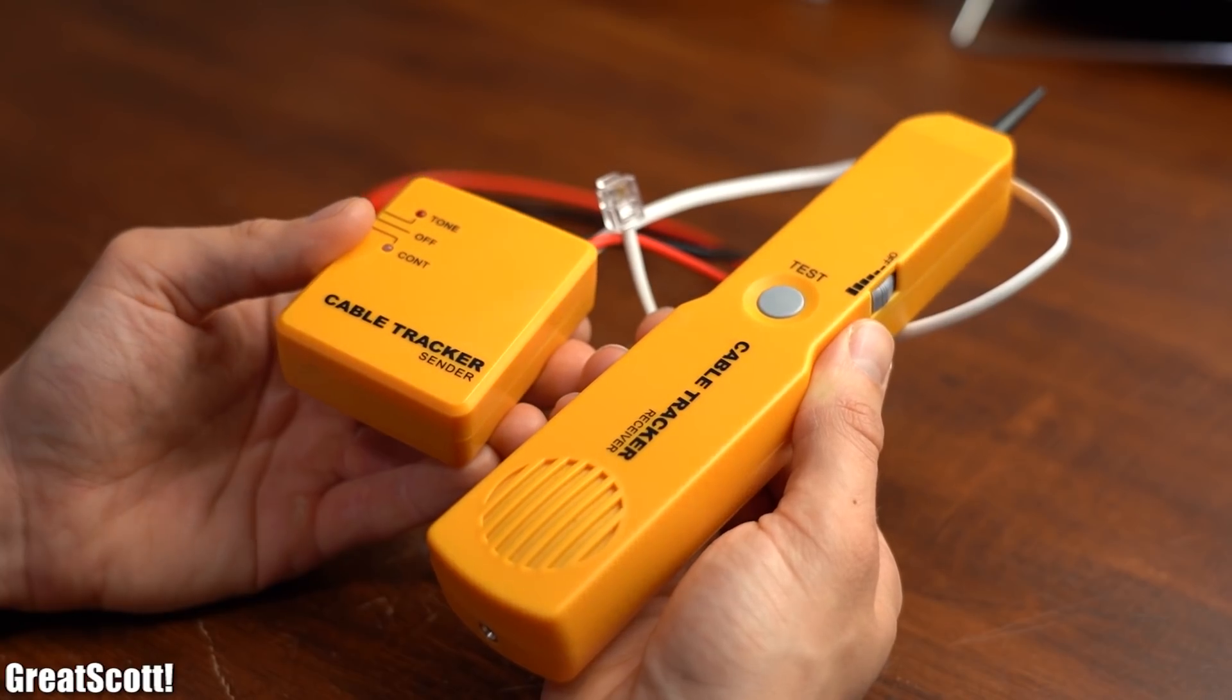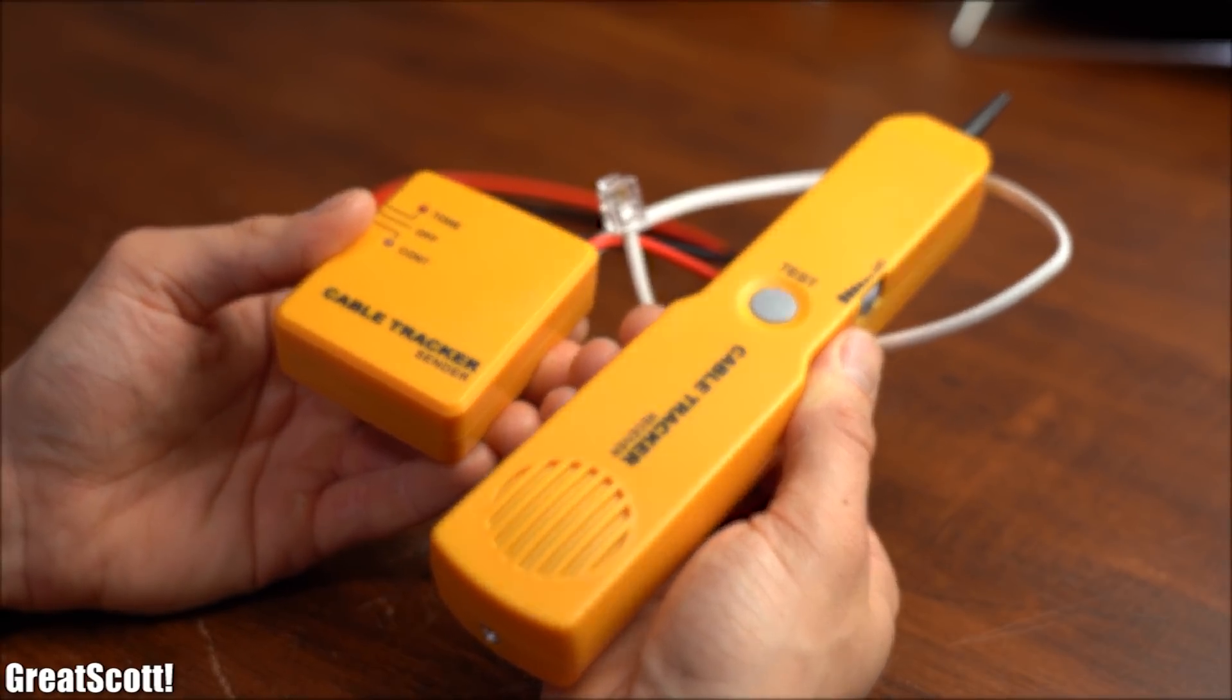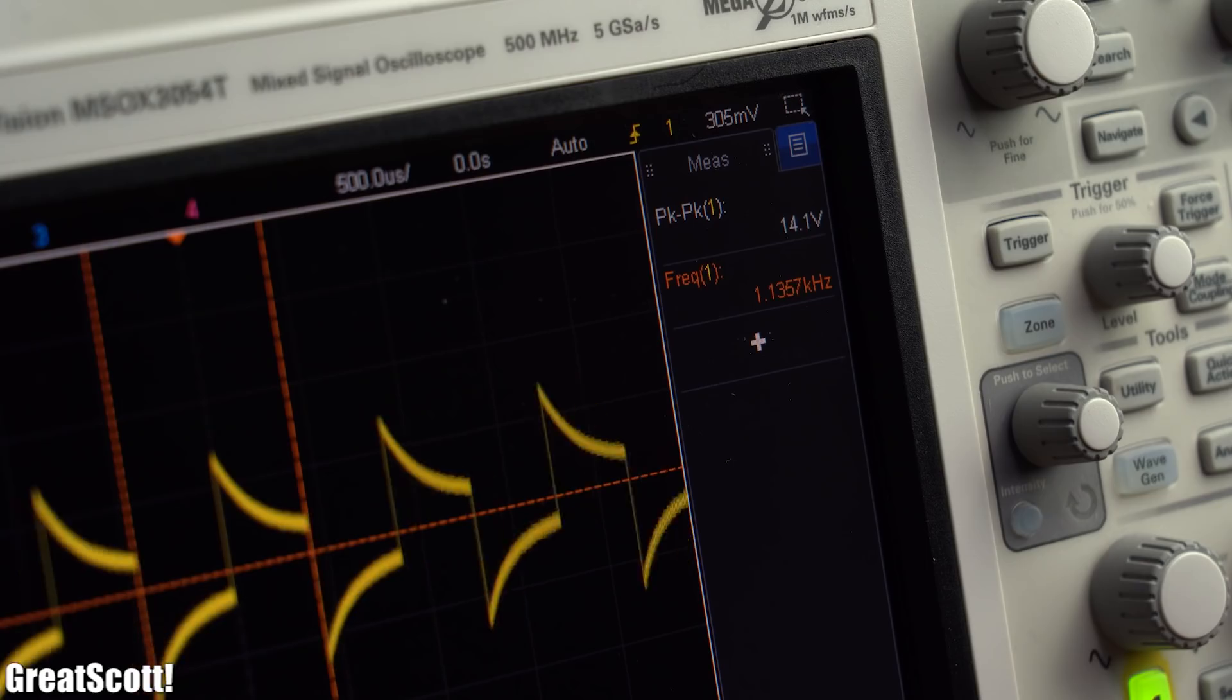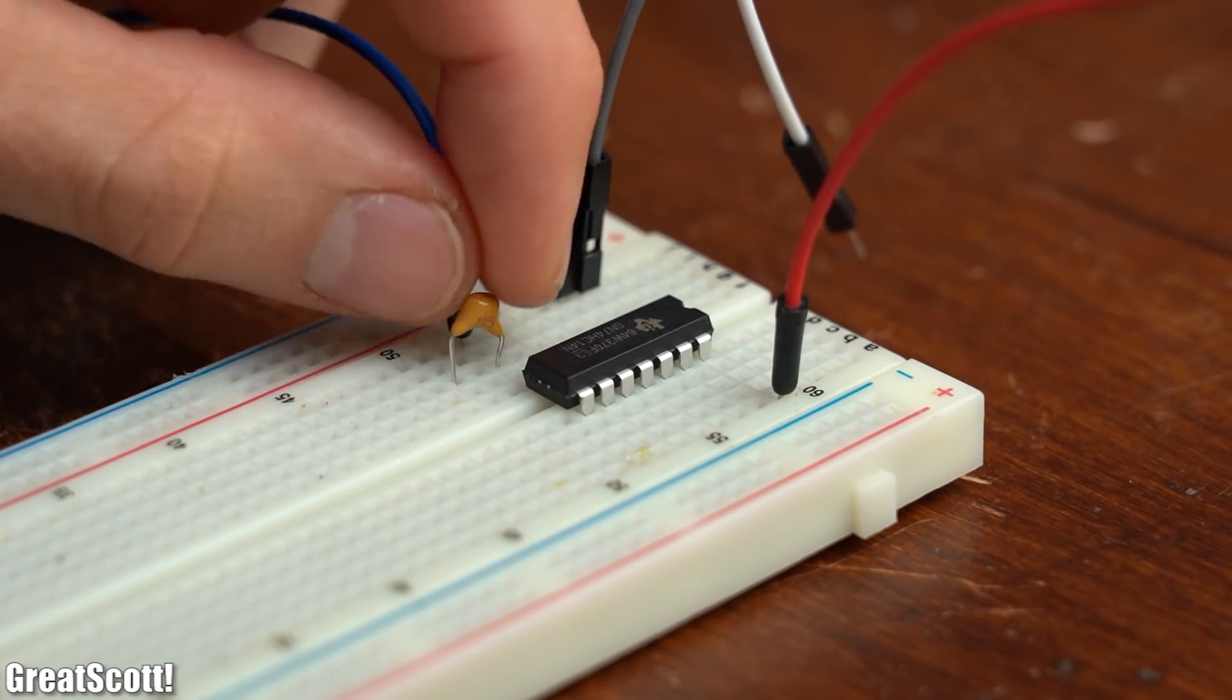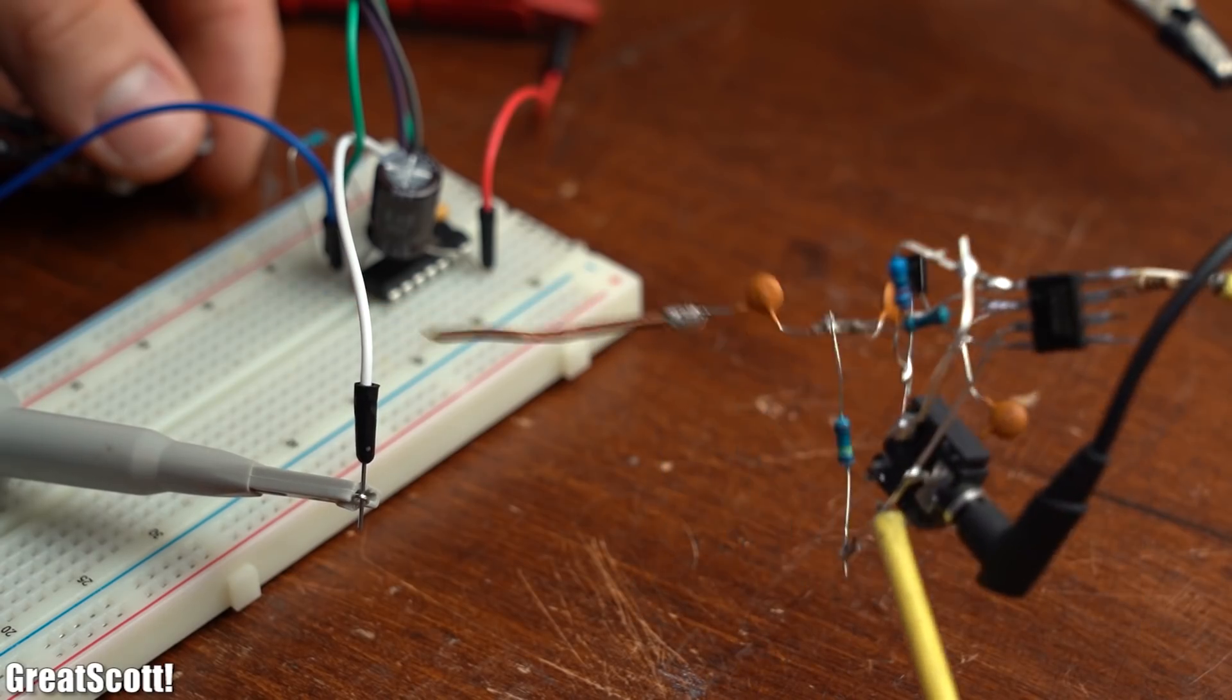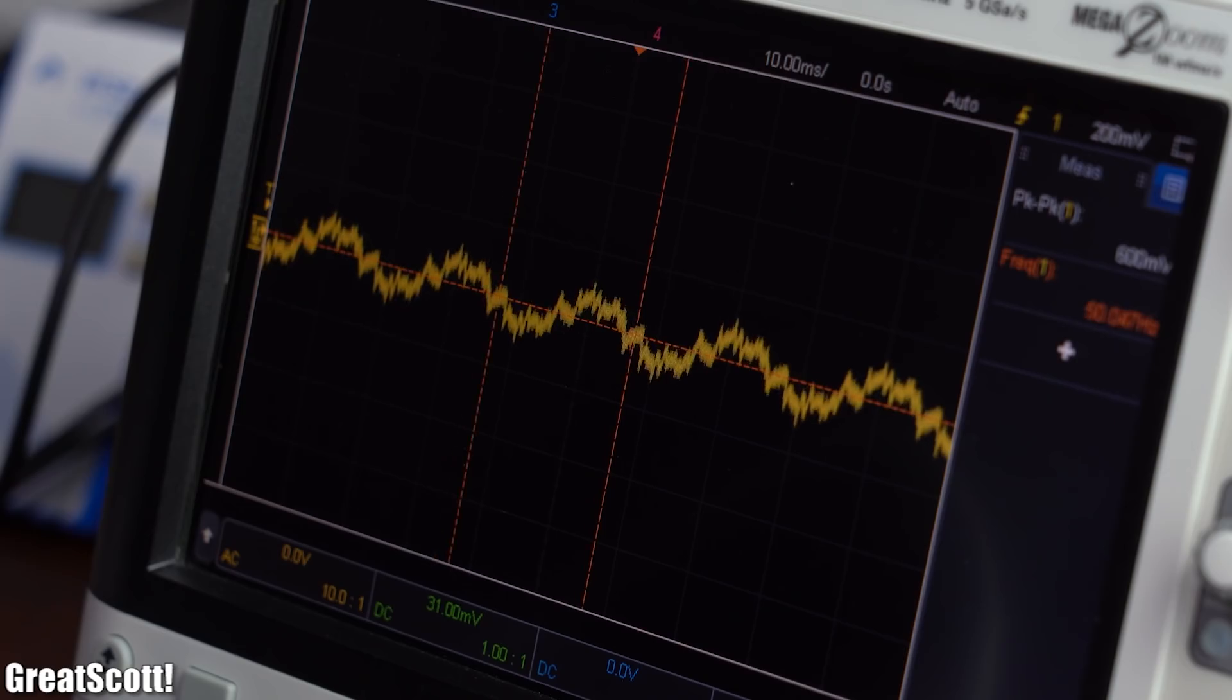I personally think this product is pretty handy to have around, which is why in this episode of DIY or Buy, I will not only reverse engineer the circuits of this tool and explain how they work, but I will also show you how to create a super crude DIY version that you can make within 15 minutes. At the end, I will decide which version I recommend you to use. Let's get started!